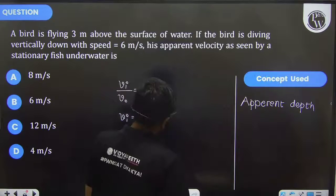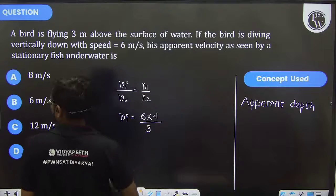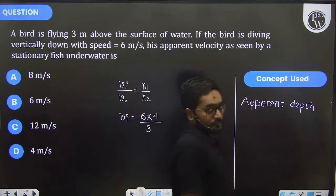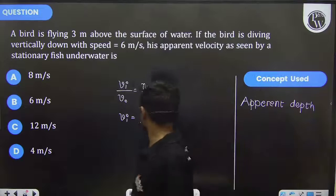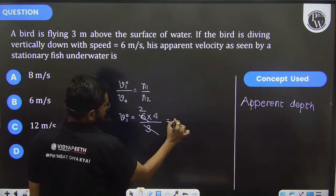So 6 times 4/3—that's 8 meters per second. This speed will be observed by the fish.